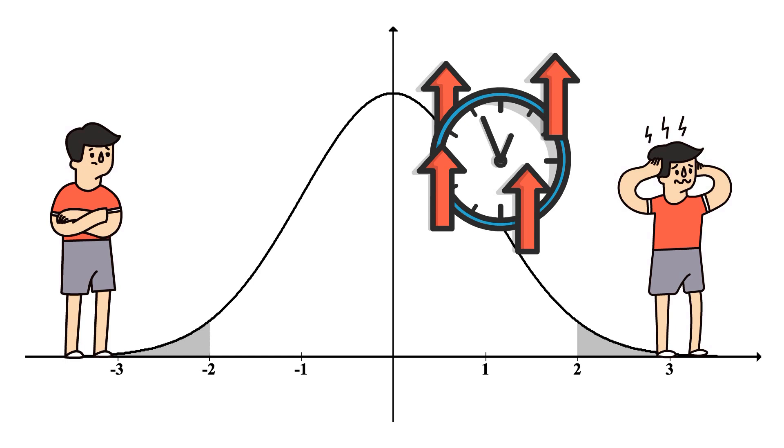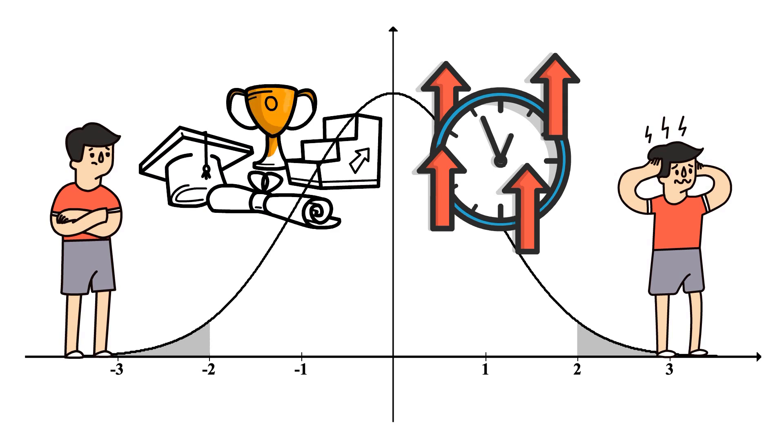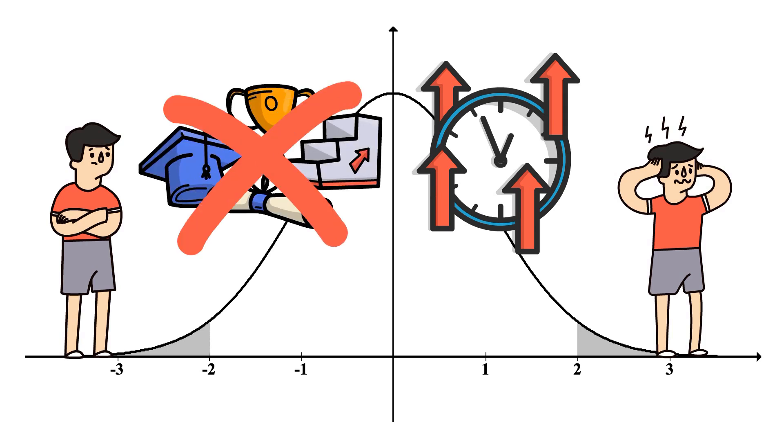For example, if someone is spending 8 hours each day checking the front door or washing their hands, it will be practically impossible for them to engage in any kind of work, school, or social life.